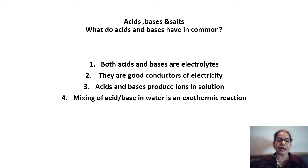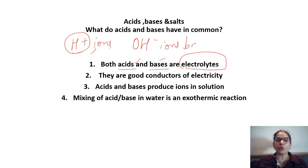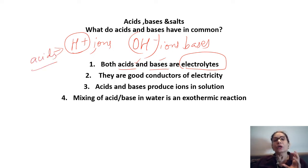Both acids and bases are electrolytes — substances which conduct electricity. They conduct electricity because they dissociate into ions. Acids dissociate and give H+ ions in solution, and bases give OH− ions in solution. Because they ionize in solution and produce ions, they are good conductors of electricity and we call them very good electrolytes.